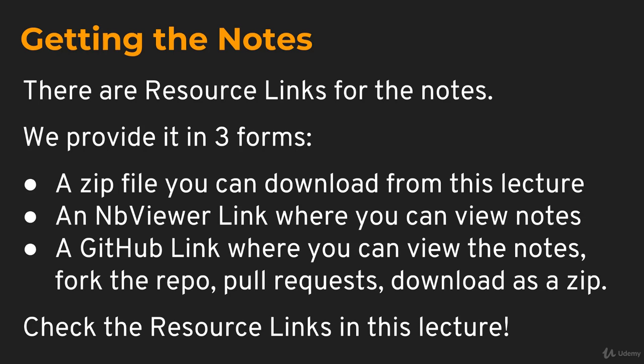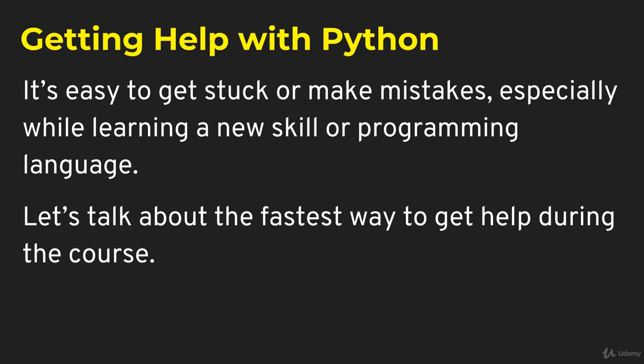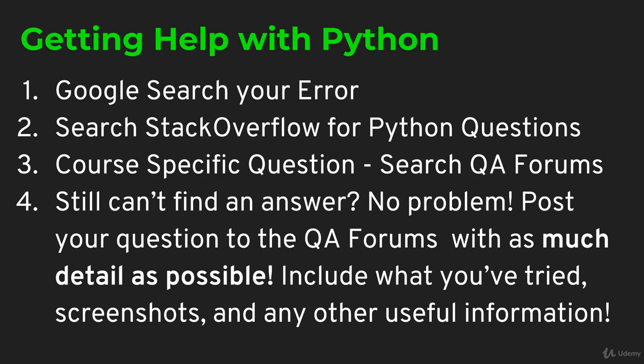Basically, you have three different ways of getting all the notes onto your computer. Now, finally, how to get help with Python. It's really easy to get stuck or make mistakes, especially when you're learning a new skill or programming language. So I want to quickly talk about the fastest way to get help during the course. First, I would always recommend that you do a Google search for your error, because really about 90% of the time someone else has the exact same error as you, and the first link on Google is an answer to that error. Or even if it's not an error — if it's just a question on how to do something with a list in Python, or maybe how to do a particular task in Python — just Google searching that task, there's almost always an answer already for you. So that way, you don't even need to wait for a response from us.